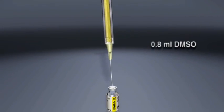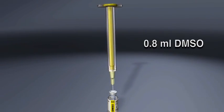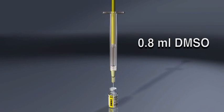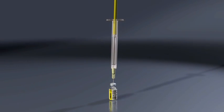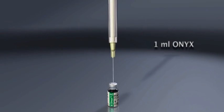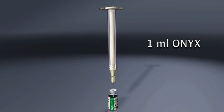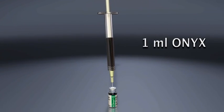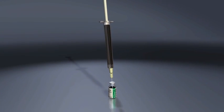Aspirate approximately 0.8 mL of the supplied DMSO into the yellow 1 mL DMSO syringe. Next, aspirate exactly 1 mL of the mixed Onyx into the white 1 mL Onyx syringe using an 18 or 20 gauge needle.